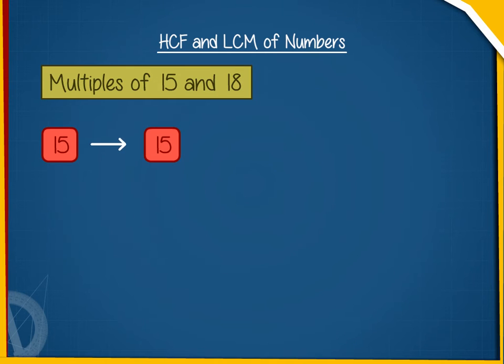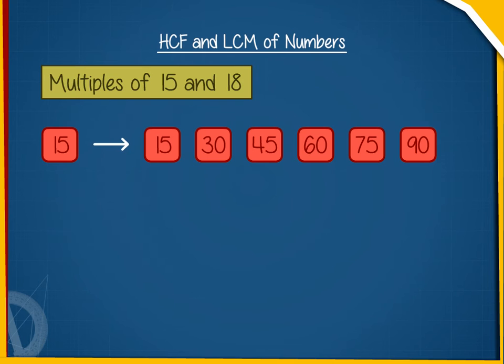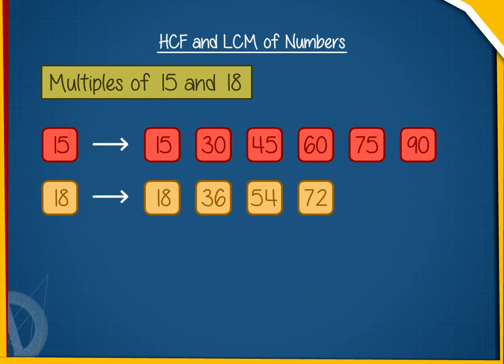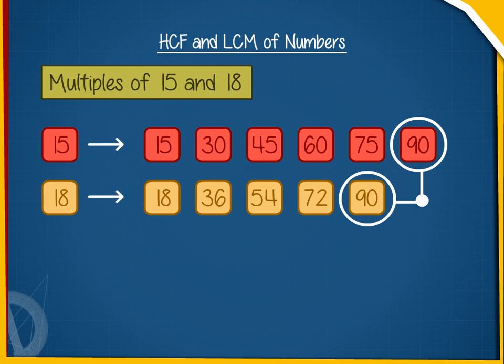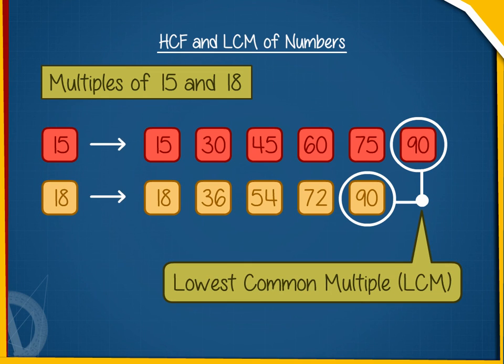The multiples of 15 are 15, 30, 45, 60, 75, 90, and so on. The multiples of 18 are 18, 36, 54, 72, 90, and so on. We see that 90 is the lowest multiple that is common for both 15 and 18. Therefore, the lowest common multiple of 15 and 18 is 90.